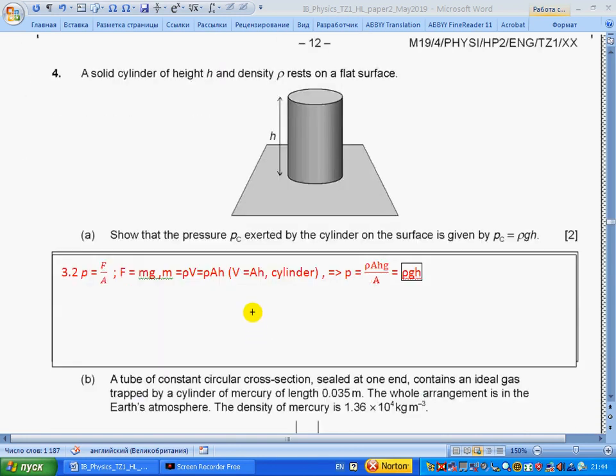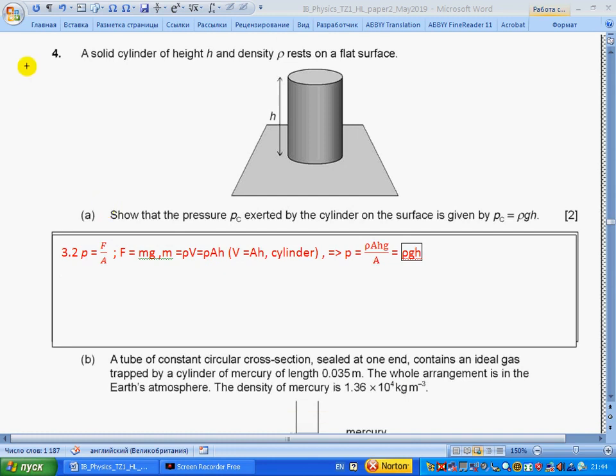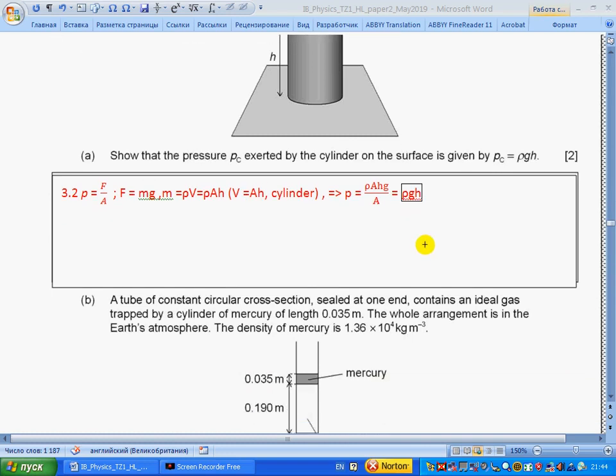Question 4, part a: A solid cylinder of height h and density rho rests on a flat surface. Show that the pressure exerted by the cylinder on the surface is given by rho g h. Section 3.2: pressure equals force over area. Force is weight, mg. Mass is rho V, which equals area times height for a cylinder. Substituting this expression, we get rho g h. This is actually the formula for pressure of a liquid.